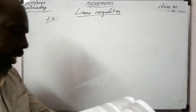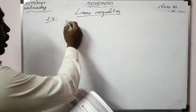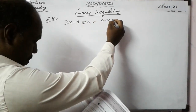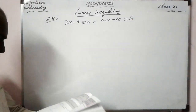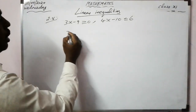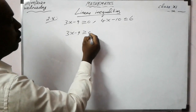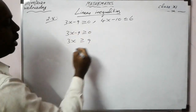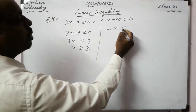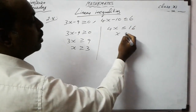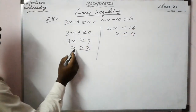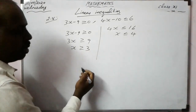Example 2.8: Solve the following system of linear inequalities: 3x − 9 ≥ 0 and 4x − 10 ≤ 6. From the first inequality: 3x ≥ 9, so x ≥ 3. From the second: 4x ≤ 16, so x ≤ 4.